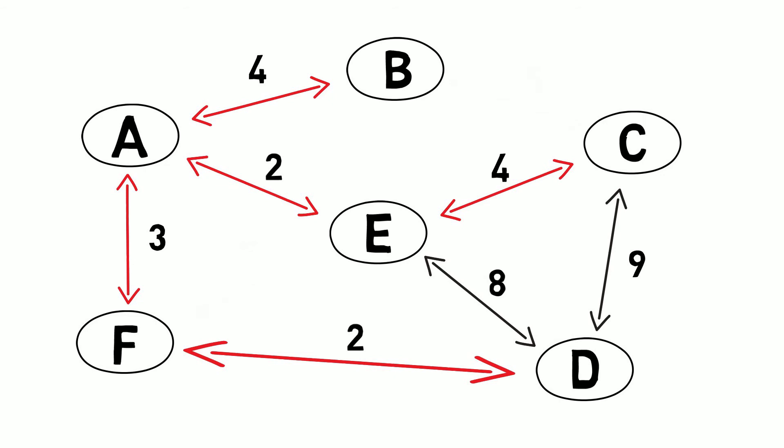8 between E and D would cause a cycle between A, E, F, and D, and it was the highest so we can remove that as well.